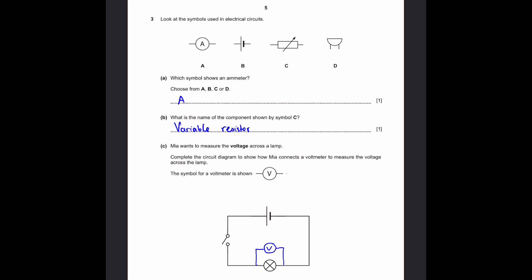Part C: Mia wants to measure the voltage across a lamp. Complete the circuit diagram to show how Mia connects a voltmeter to measure the voltage across the lamp. The symbol for a voltmeter is shown as V. Even though ammeters are connected in series with a circuit, voltmeters have to be connected in parallel. In this case, we need to find how much voltage is across the lamp, so we have to place a voltmeter in parallel to the lamp.